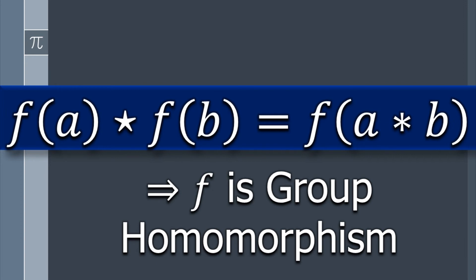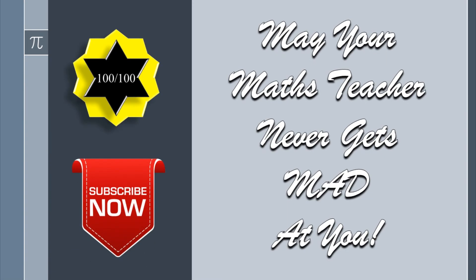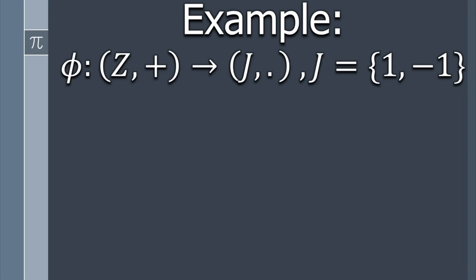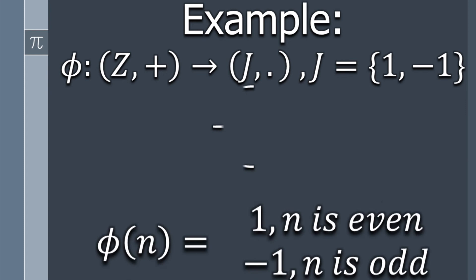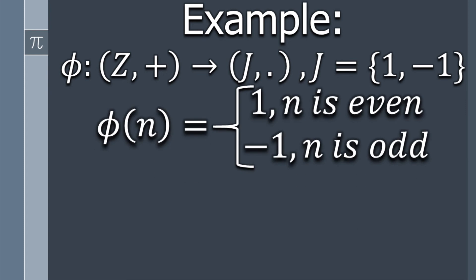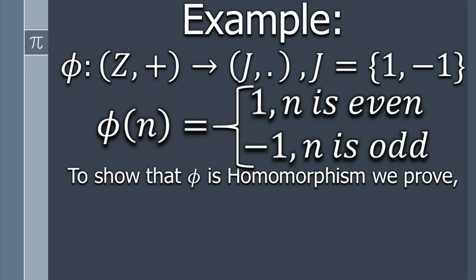Now let's move towards an example to understand the concept a little better. φ is a function defined from the group of integers under addition to a group J under multiplication, where J is the set {1, −1}. Also, φ takes the value 1 when n is even and −1 when n is odd. To show that φ is a homomorphism, we need to prove that φ(a + b) = φ(a) × φ(b).